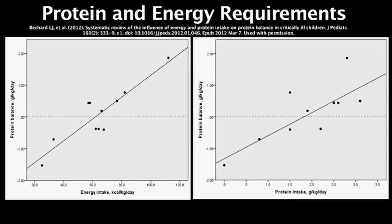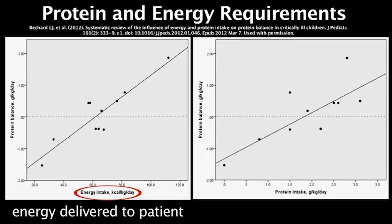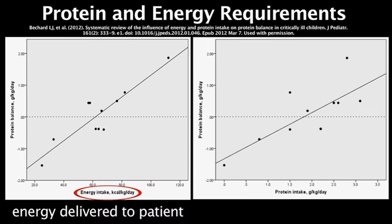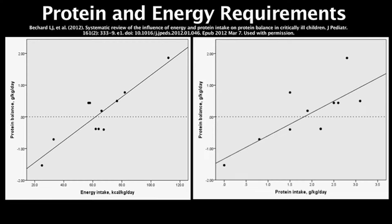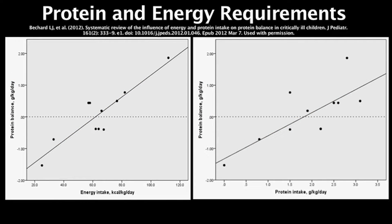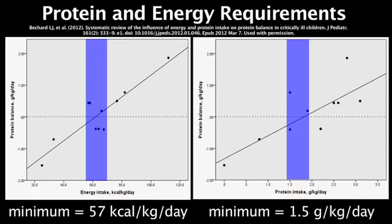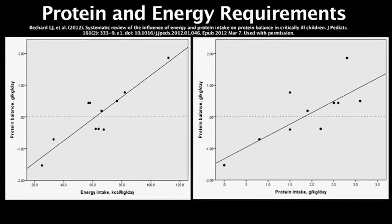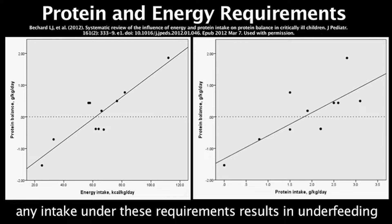These results come from a recent analysis of literature we conducted, examining the optimal amount of energy and protein a critically ill child requires to maintain a positive protein balance. The x-axis depicts energy delivered on the left figure and protein delivered on the right, showing a direct correlation with energy balance on the y-axis. The conclusion was that a minimum of 57 calories per kilogram per day and protein intake of at least 1.5 grams per kilogram per day were required to reach a positive nitrogen balance and preserve lean body mass. Any intake below these amounts would result in cumulative underfeeding.